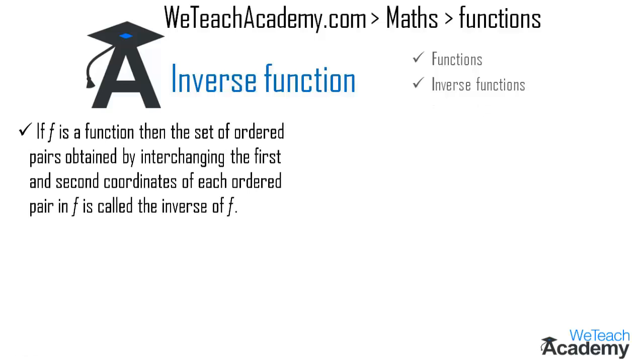If f is a function, then the set of ordered pairs obtained by interchanging the first and second coordinates of each ordered pair in the function f is called the inverse of f. It is denoted by f inverse.